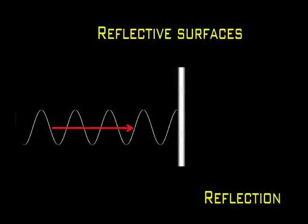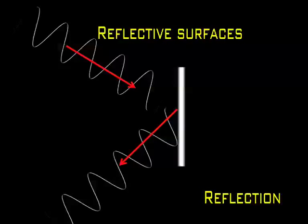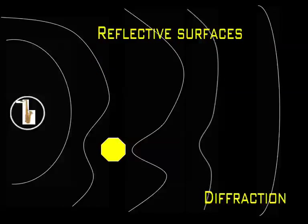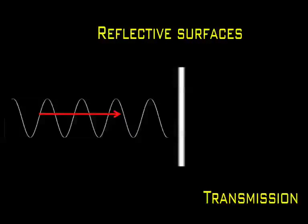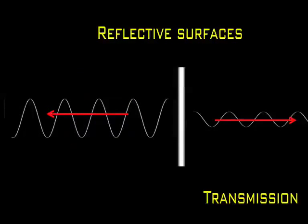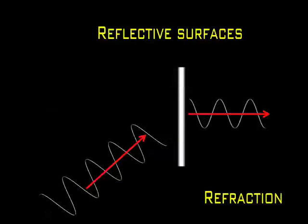There are essentially four possible behaviors which a wave could exhibit at a boundary. Reflection, the bouncing off the boundary. Diffraction, the bending around the obstacles without crossing over the boundary. Transmission, the crossing of the boundary into the new material. And refraction, which occurs along with transmission and is characterized by the subsequent change in speed and direction.